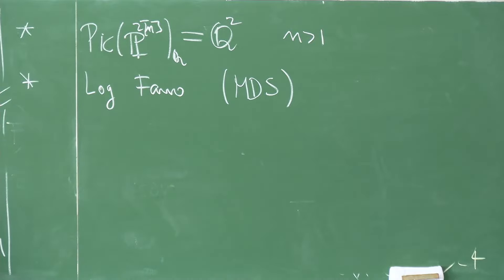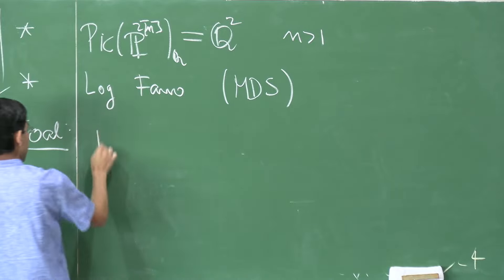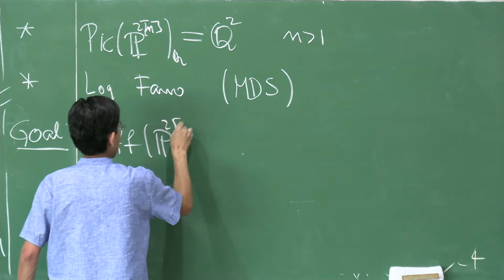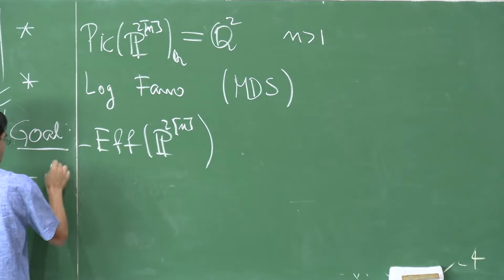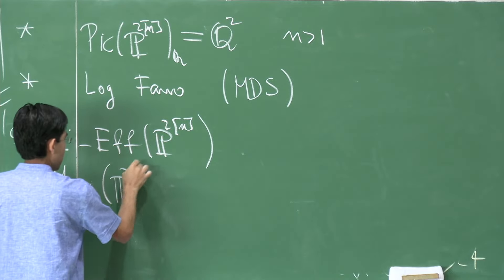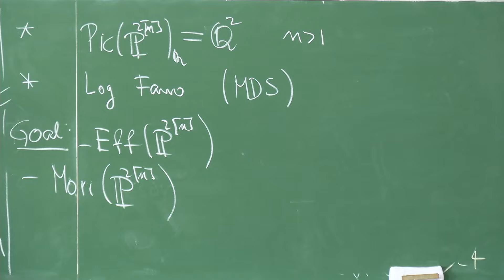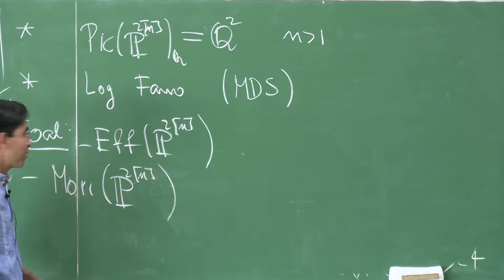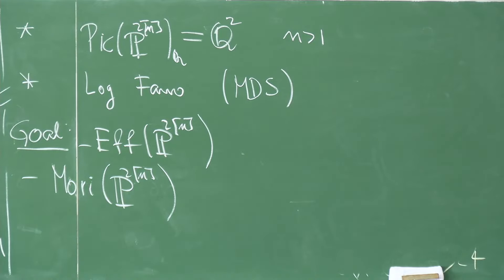The goal for today is: first, to tell you something about the effective cone of this space; and second, to tell you something about the Mori chamber decomposition, which I know has finitely many chambers from the Mori dream space property. So I might be able to finish the job by giving the full Mori chamber decomposition. Let me focus on these two goals.